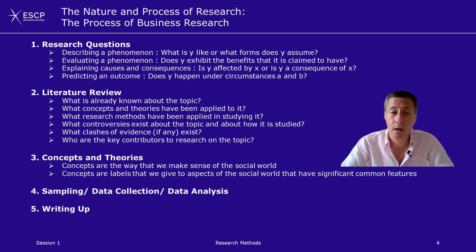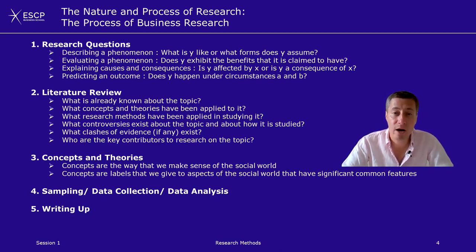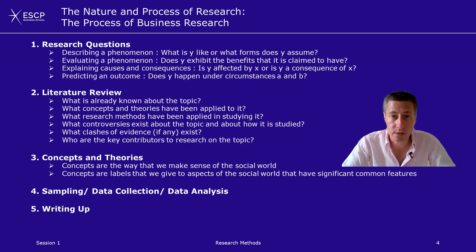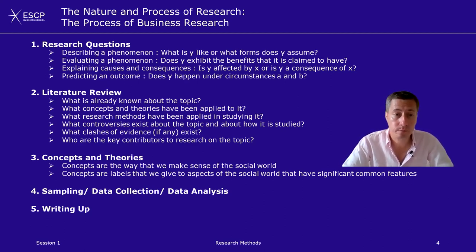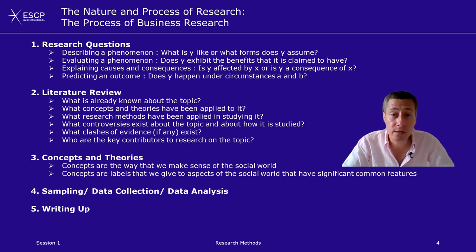There are four big types of research questions. Some research is simply about description — what is the phenomenon like and which forms does it assume? Some are about evaluation — does a certain thing actually have the benefits it is claimed to have? Sometimes it's about causes and consequences — which variables impact a thing and which variables are the outcome measures. And sometimes it can also be about prediction — does the thing happen under certain circumstances? For example, more and more companies focus on ESG goals and sustainability. Descriptive work would simply look at the phenomenon: how do companies do this, why do they do it, how do they communicate about it? Evaluating the phenomenon would ask whether ESG actually makes the world a better place.